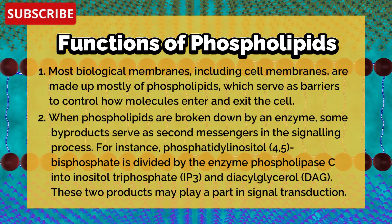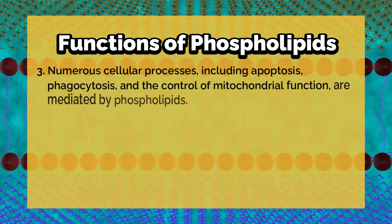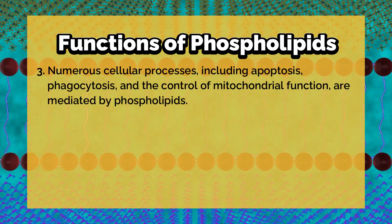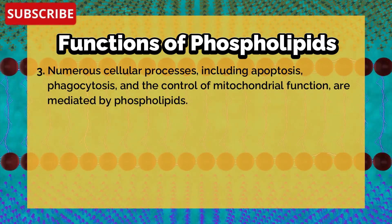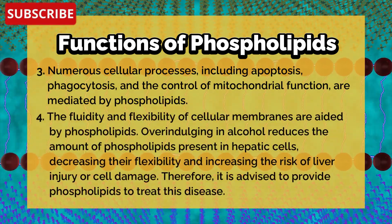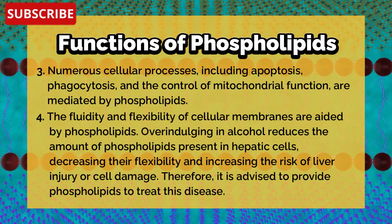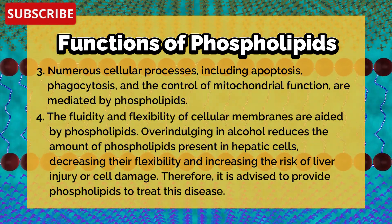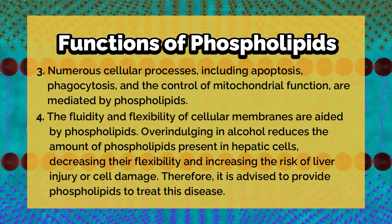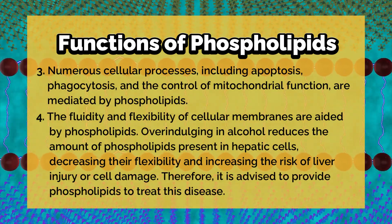These two products may play a part in signal transduction. Numerous cellular processes, including apoptosis, phagocytosis, and the control of mitochondrial function, are mediated by phospholipids. The fluidity and flexibility of cellular membranes are aided by phospholipids. Overindulging in alcohol reduces the amount of phospholipids present in hepatic cells, decreasing their flexibility and increasing the risk of liver injury or cell damage.